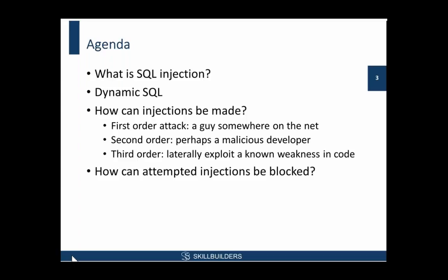The second order attack may involve setting a time bomb for breaking in later on. The third order, or lateral attack, you go sideways. That, in some ways, is the most frightening — you're exploiting known weaknesses in badly written code, which could occur pretty much anywhere. So we'll go through three techniques, a demonstration of each, and then we'll see how to block them.